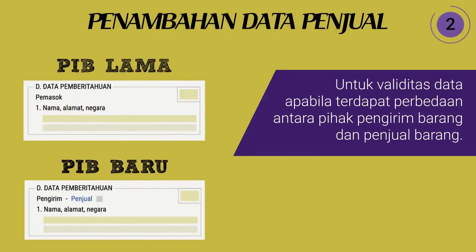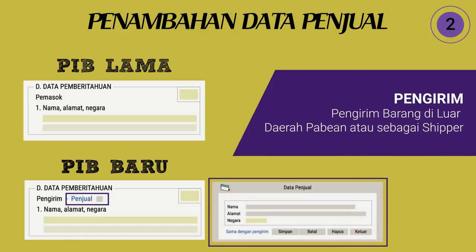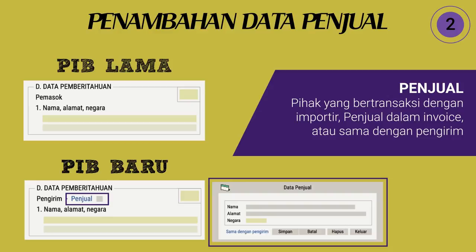Penambahan data penjual: untuk validitas data apabila terdapat perbedaan antara pihak pengirim barang dan penjual barang. Pengirim yaitu pengirim barang di luar daerah pabean atau sebagai shipper di dokumen pengangkutan (PL, RW, BL, dan lain-lain). Penjual yaitu pihak yang bertransaksi dengan importir atau pemilik, penjual dalam invoice, atau jika pengirim sama dengan penjual, diisi sama dengan pengirim.